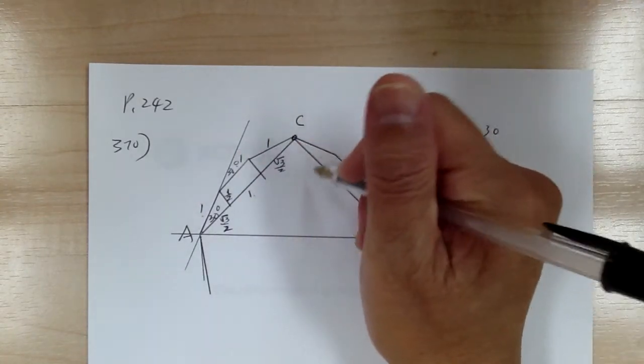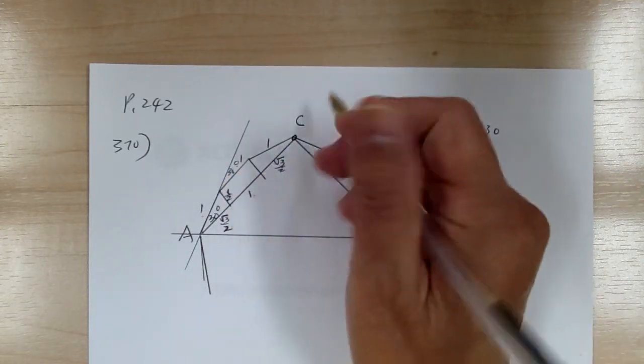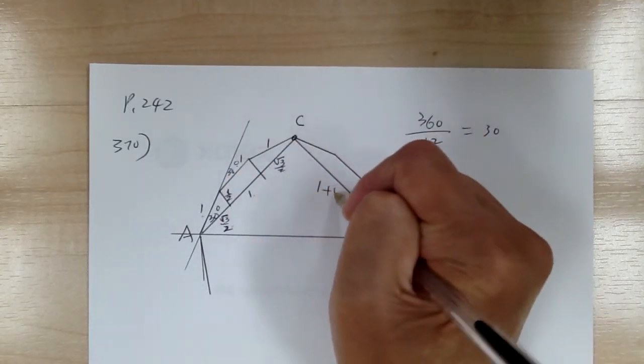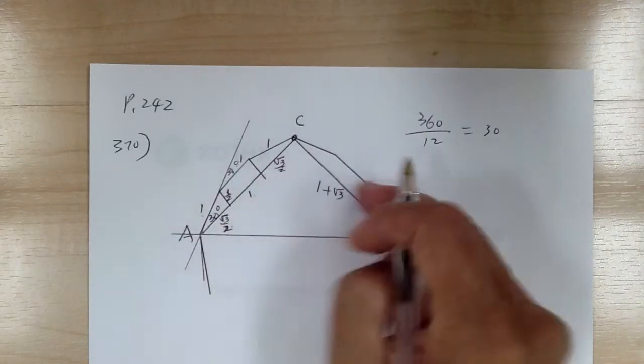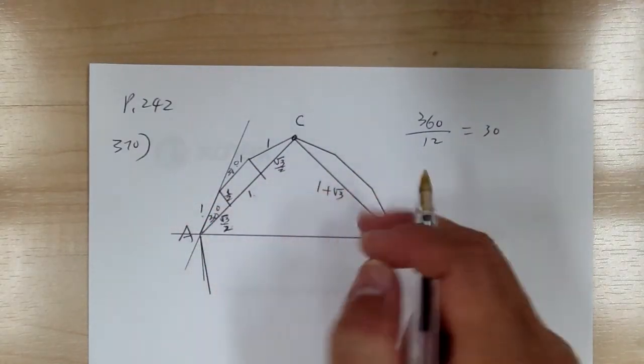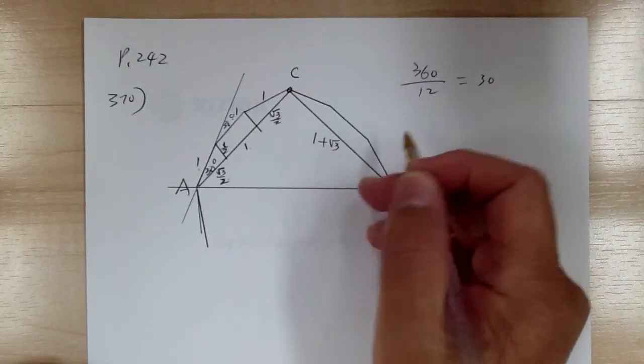So once you do that, you can see that you add this together. So this way you get one plus square root of three. You add these—these are symmetrical.